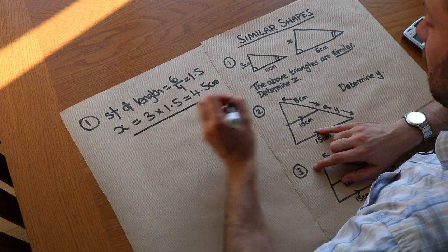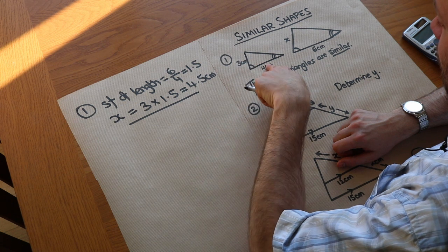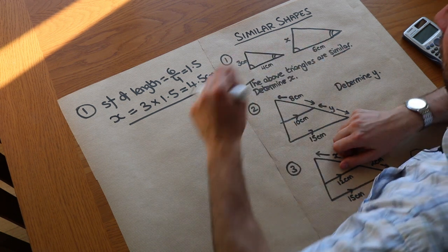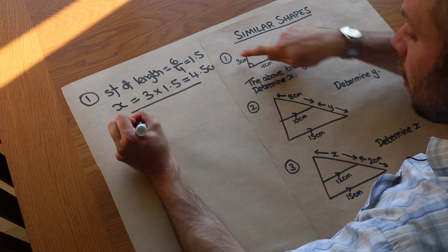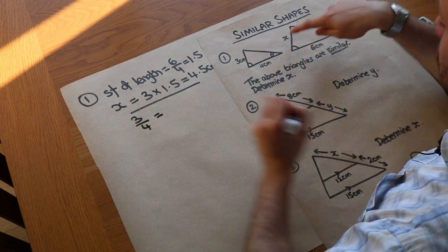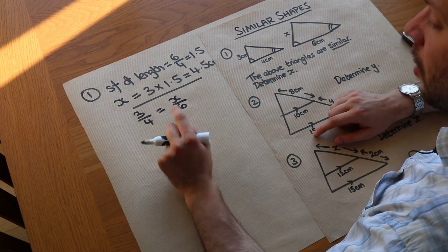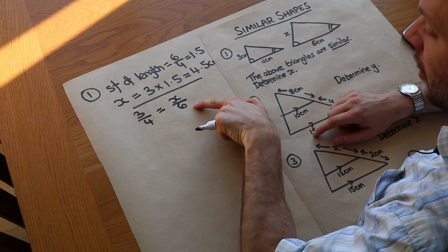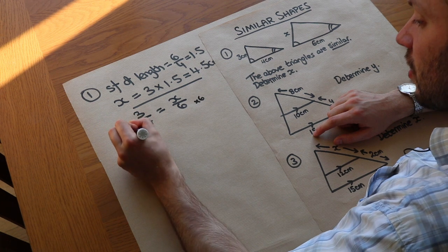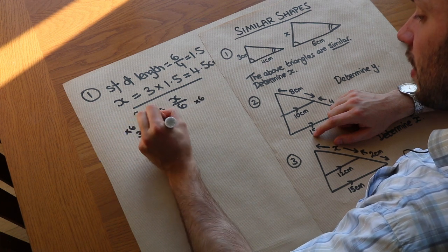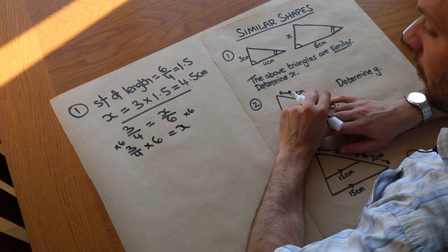An alternative way you could have done it is to use an idea of ratio. The number of times bigger this length is than this length is the same as the number of times bigger this length is than this length. We could turn that into a fractional equation like 3 over 4 equals x over 6. To solve that, I'm going to get x on its own. It's being divided by 6, so to get rid of the divide by 6, I times both sides by 6. Then I just get 3 quarters times 6 equals x, which gives us the same result of 4.5.